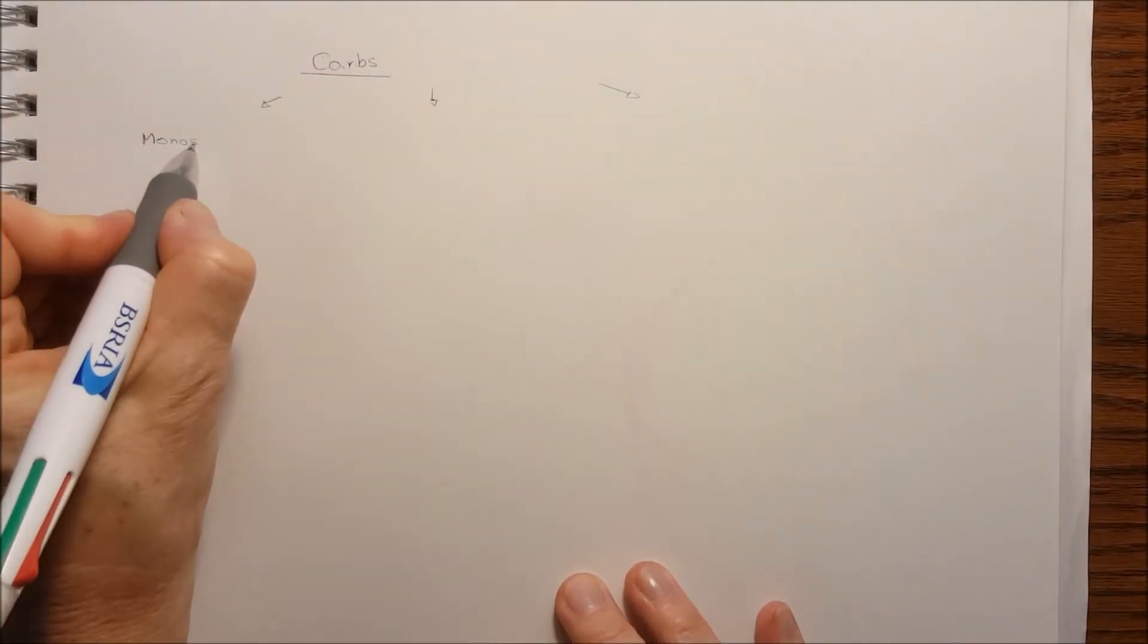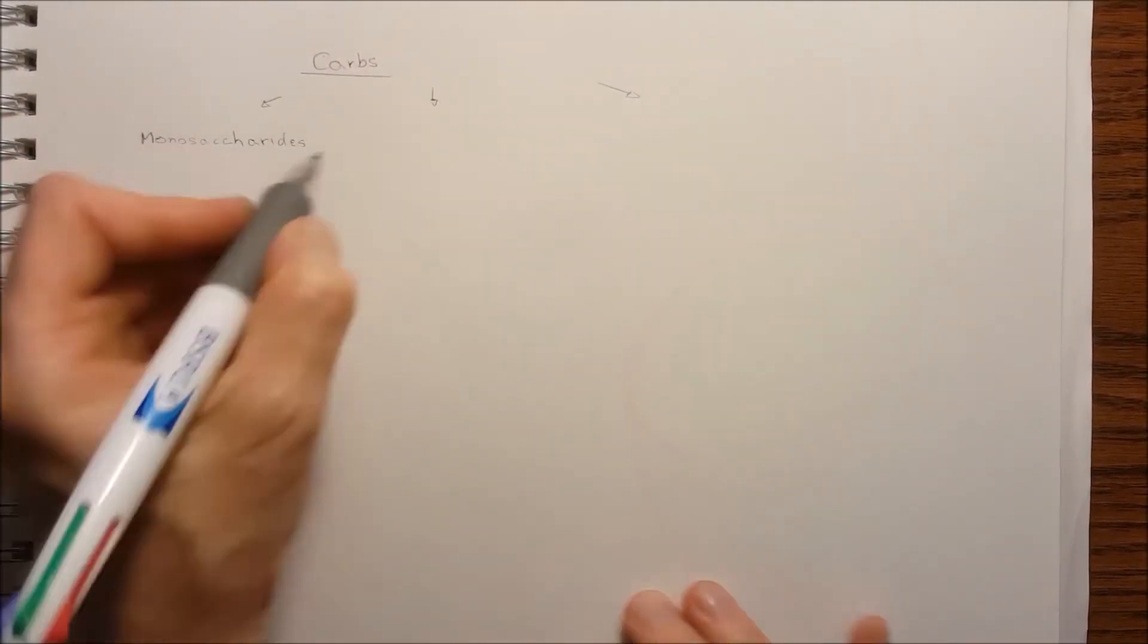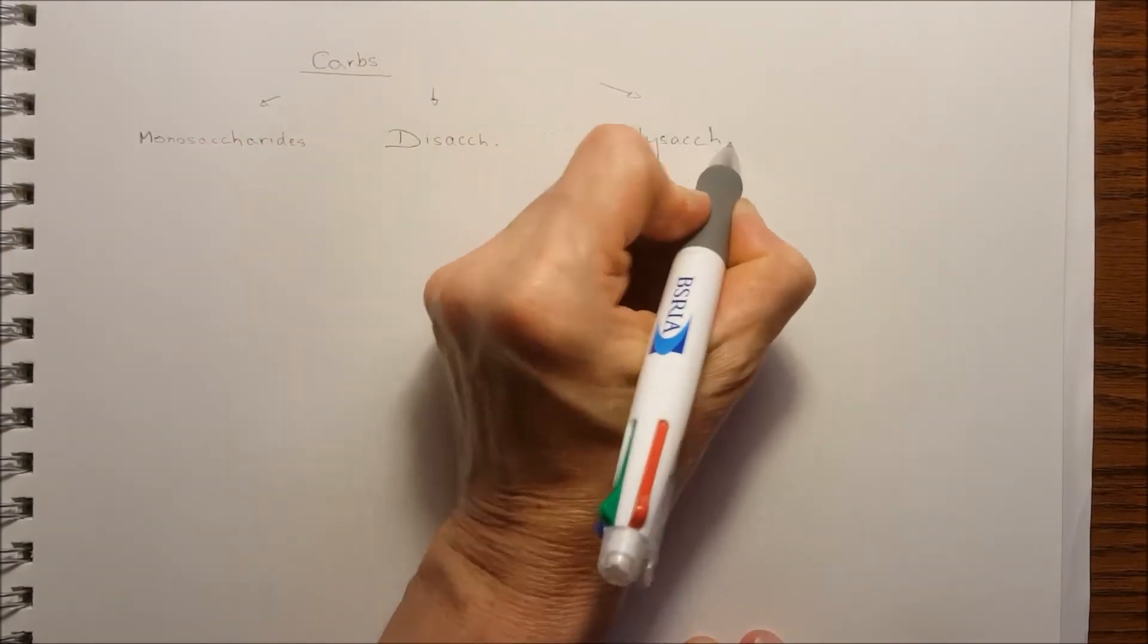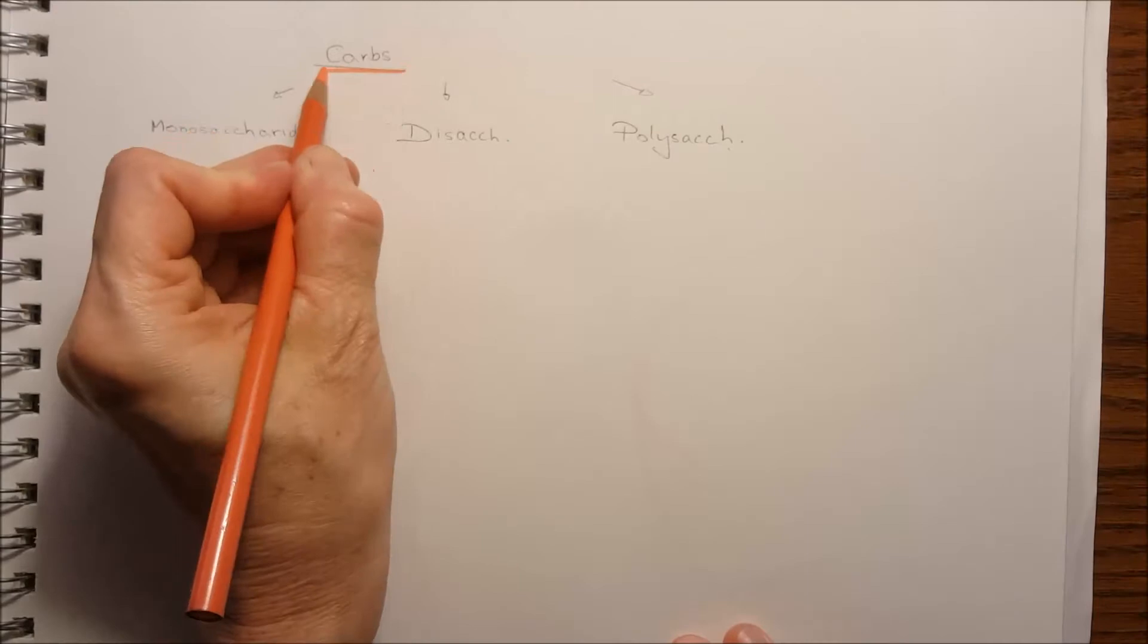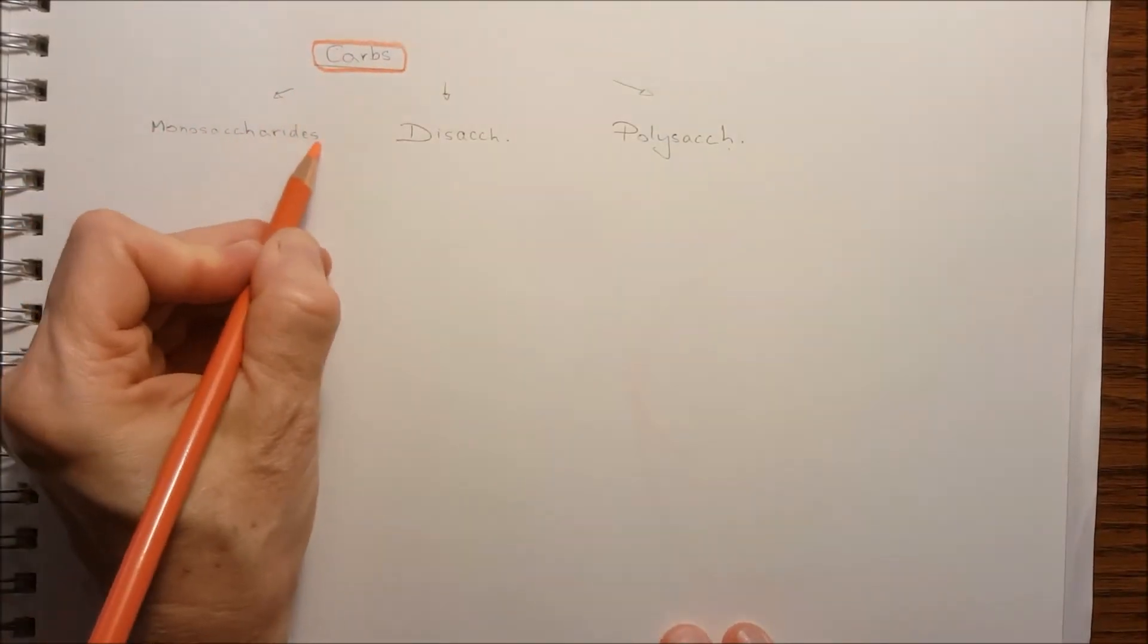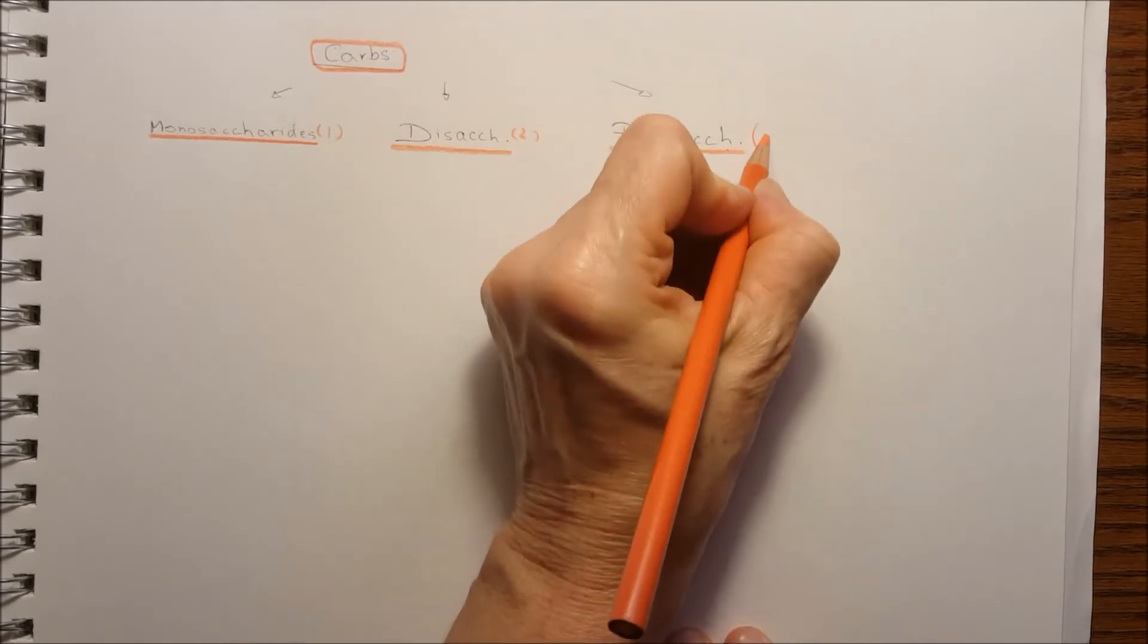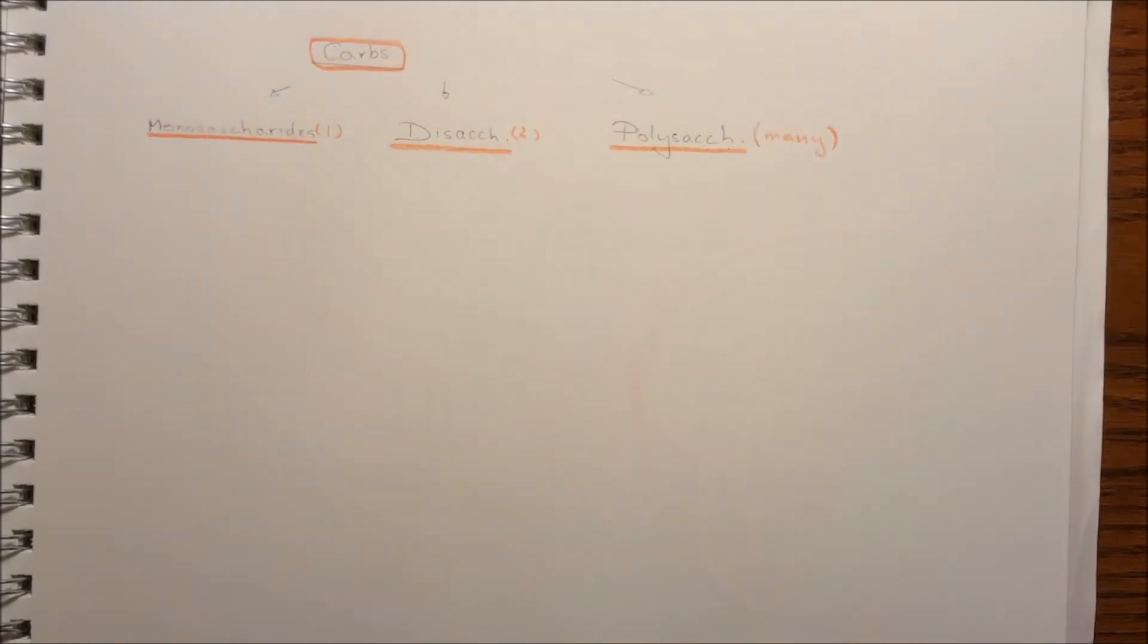There are three groups for the carbohydrates. One of them is the monosaccharides that contain one sugar group. The other one is disaccharide made out of two sugar combining together. And the polysaccharide means many sugar molecules bind together.